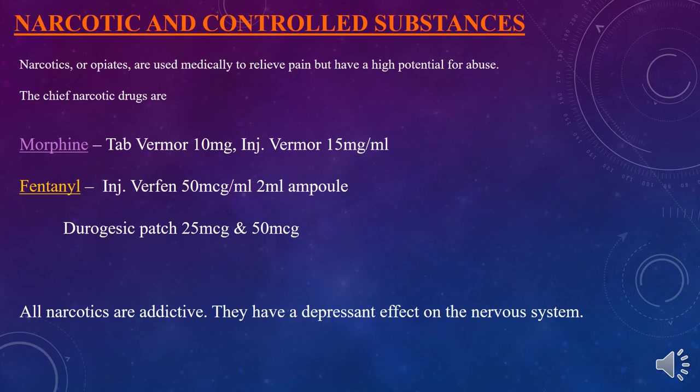Commercially available narcotic drugs include morphine and fentanyl. Morphine tablets are available as Morph 10 mg; morphine injection is available as Morph 15 mg/ml. Fentanyl injection is available as 50 mcg/ml in a 2 ml ampoule. Neurotic patches are also available in strengths of 25 and 50 mcg. All narcotics are addictive and have different effects on the central nervous system.